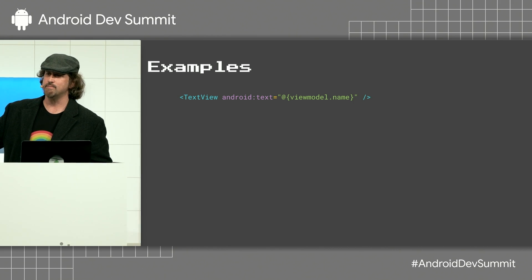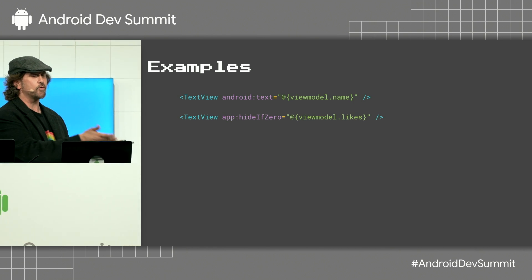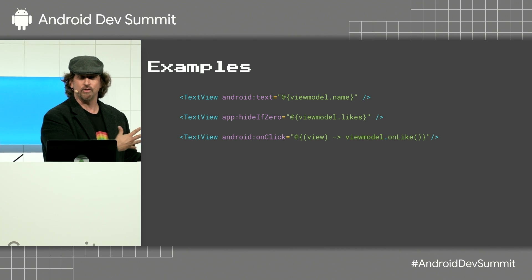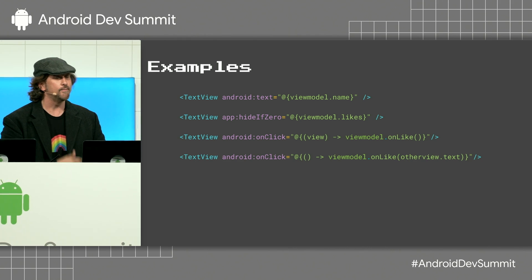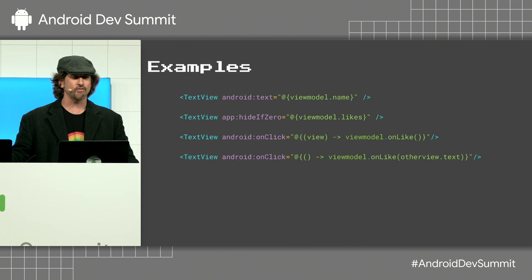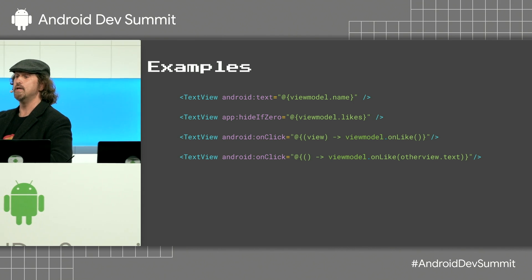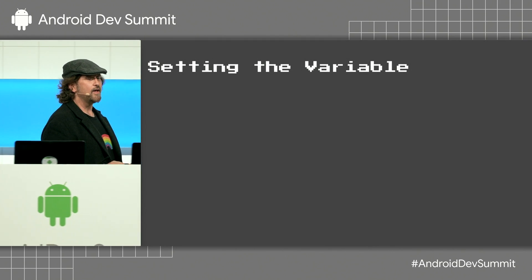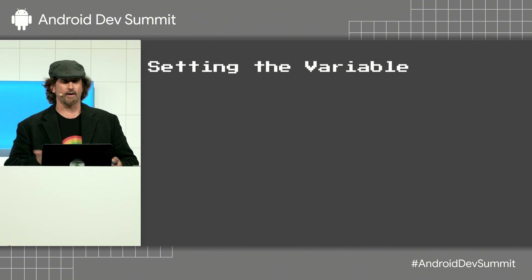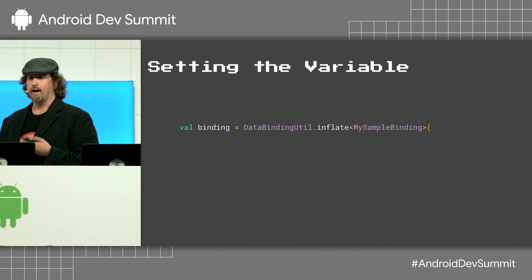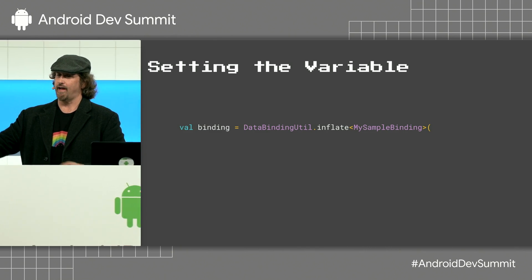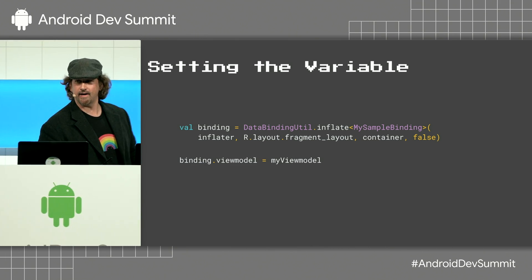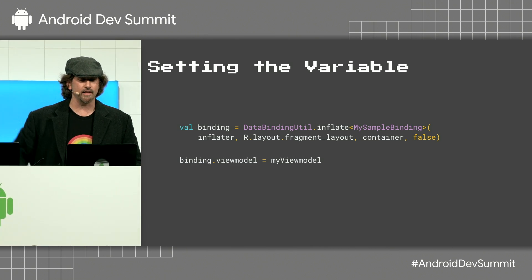In this second one, we're using a custom attribute, height if zero. In the third one, we're actually using a lambda which gets passed the text view and calls on like. And in this fourth one, we're actually using a lambda which calls on like with a text property of another view in our layout — so you can actually reference other views and pass them in. To give data binding access to the view model instance, we just set the binding object like this after inflating the layout, and then our view model is now available to that layout.